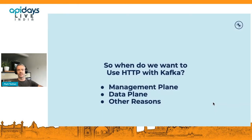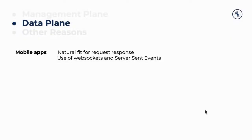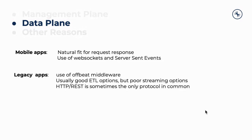When do we want to use HTTP with Kafka? There are really three considerations: the management plane, the data plane, and other reasons. Management plane includes things like cluster configuration and DevOps integration — if you're automating creation of topics, schemas, and things like that, you want to do it over an HTTP API. On the data plane, mobile applications are a very natural fit for HTTP calls because of their high level of chattiness and natural infrastructure with web sockets and server-sent events. If you're dealing with legacy applications like SAP, then using ABAP to do HTTP calls is good — don't put a database in between just to facilitate data flow.